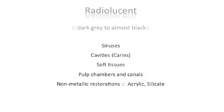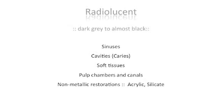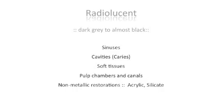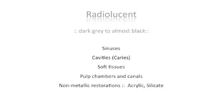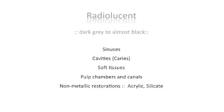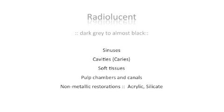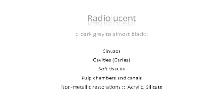Radiolucent structures are dark gray to almost black. They include sinuses, cavities or caries, soft tissues, pulp chambers and canals, and non-metal restorations such as acrylic and silicate.